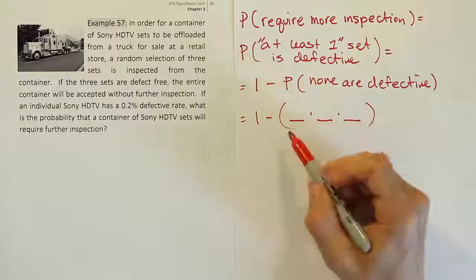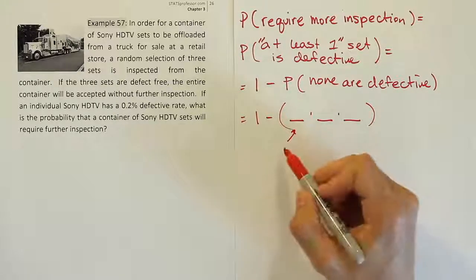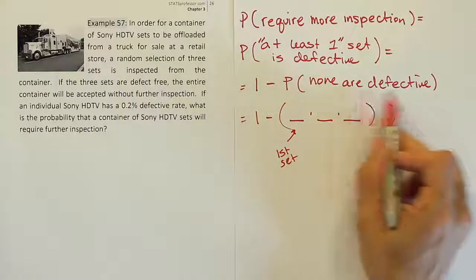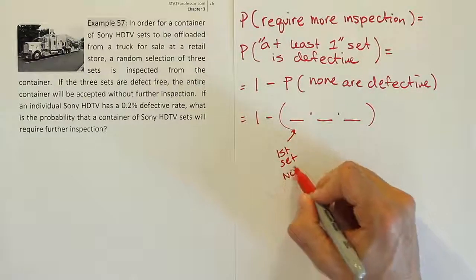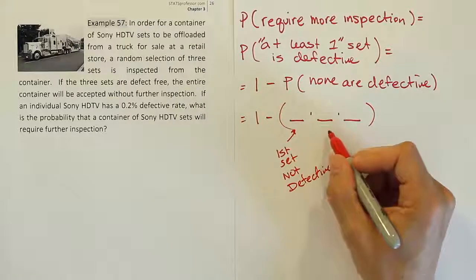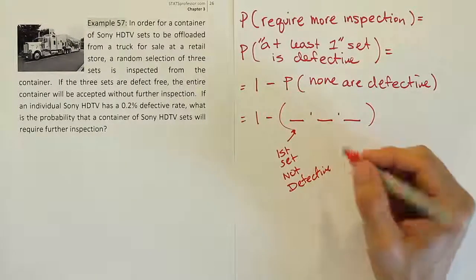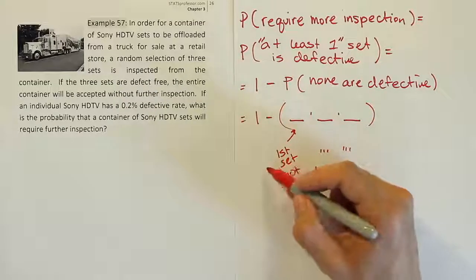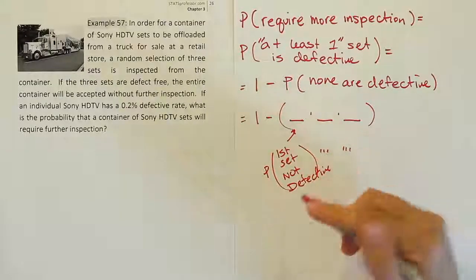And then what do I want this first thing to be? I want this to be the first set that is selected. And how do I want it to turn out? I want it to be not defective. And how do I want the second one to turn out? The second set should not be defective. And then the third set should not be defective. So I know these probabilities, at least I know what I'm supposed to put there.